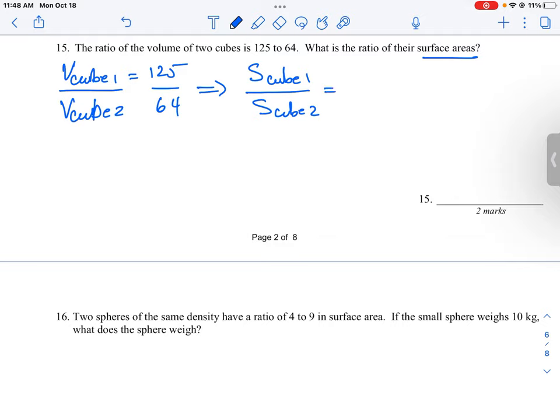So that is going to be equal to the cube root of 125, and then the cube root of 64. So what numbers multiply together to give you 125? Three times that's going to give you 5,